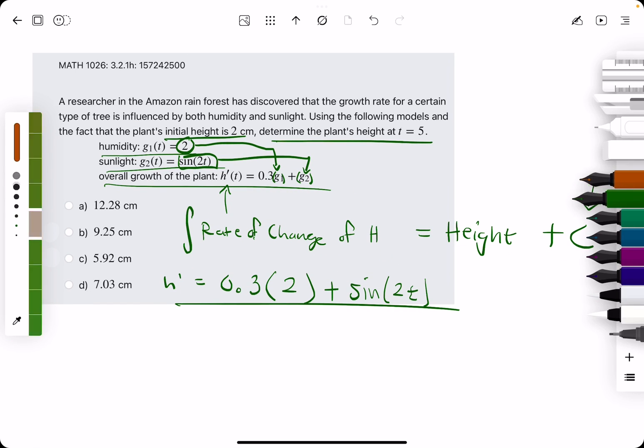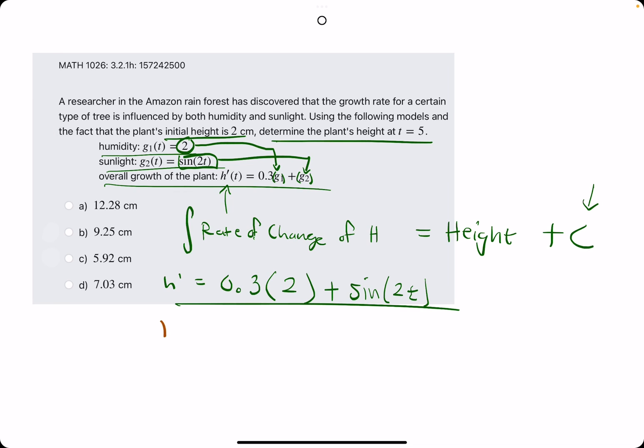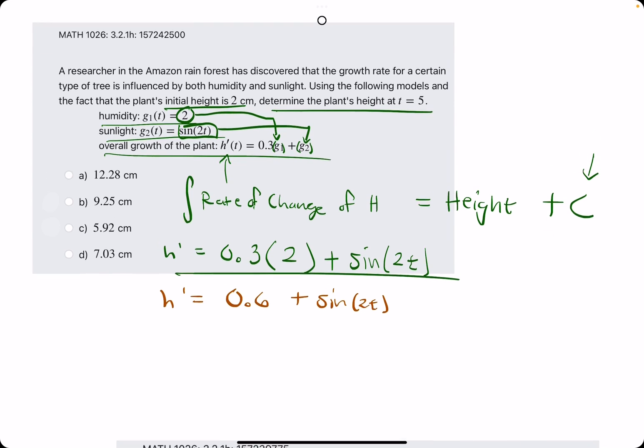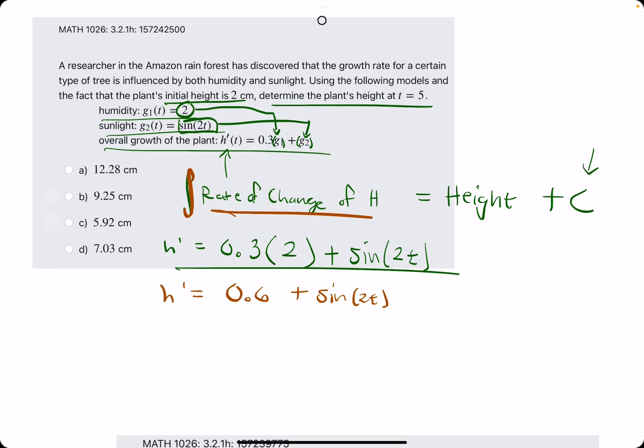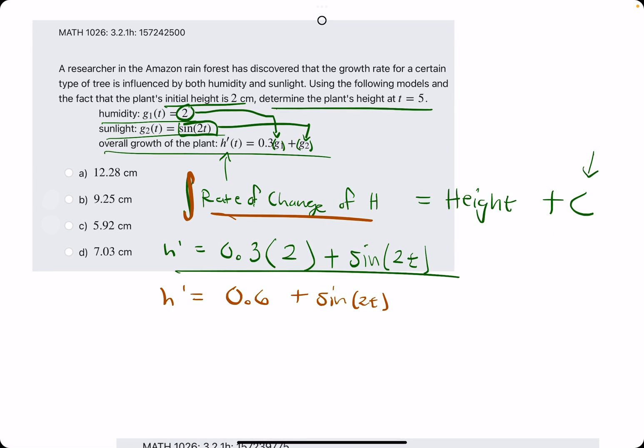To simplify this a little bit, we have 0.6 plus sine of 2t. Now, again, we are finding the antiderivative or the integral of the rate of change of h, or h prime.